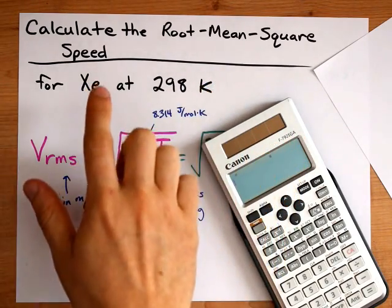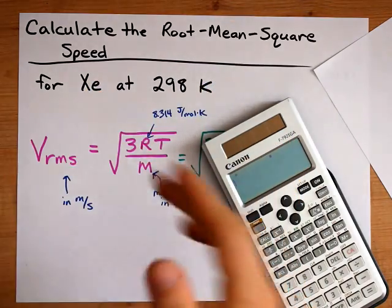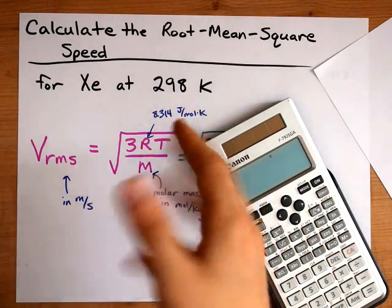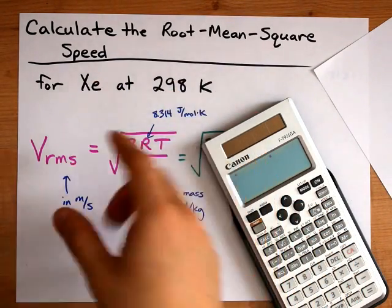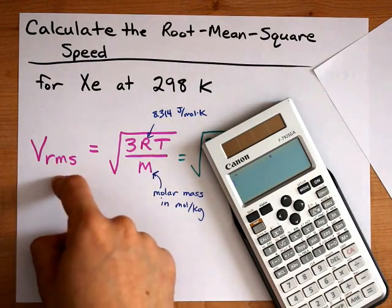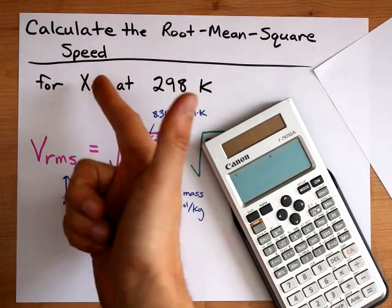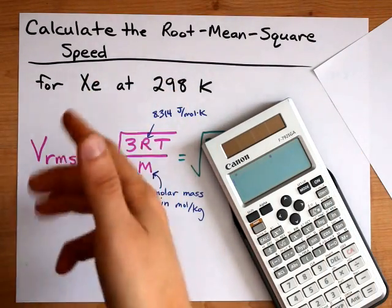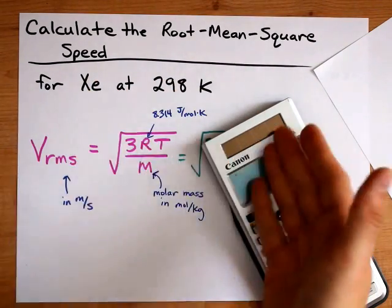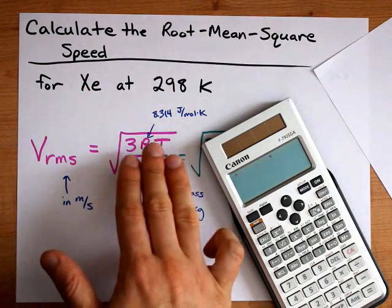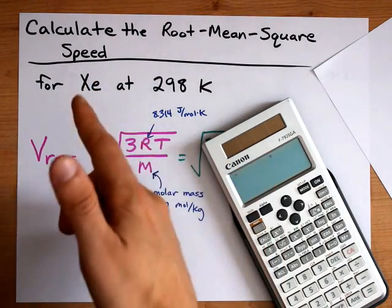It's important to remember that some of the xenon atoms will be traveling slowly, some of them will be traveling quickly, and on average they'll be traveling something in the middle. VRMS, or root mean square speed, is not a literal average of all the velocities of the xenon atoms. It is just one way that we can measure an approximate average, and it comes from the kinetic energy that we know the molecules or atoms have.